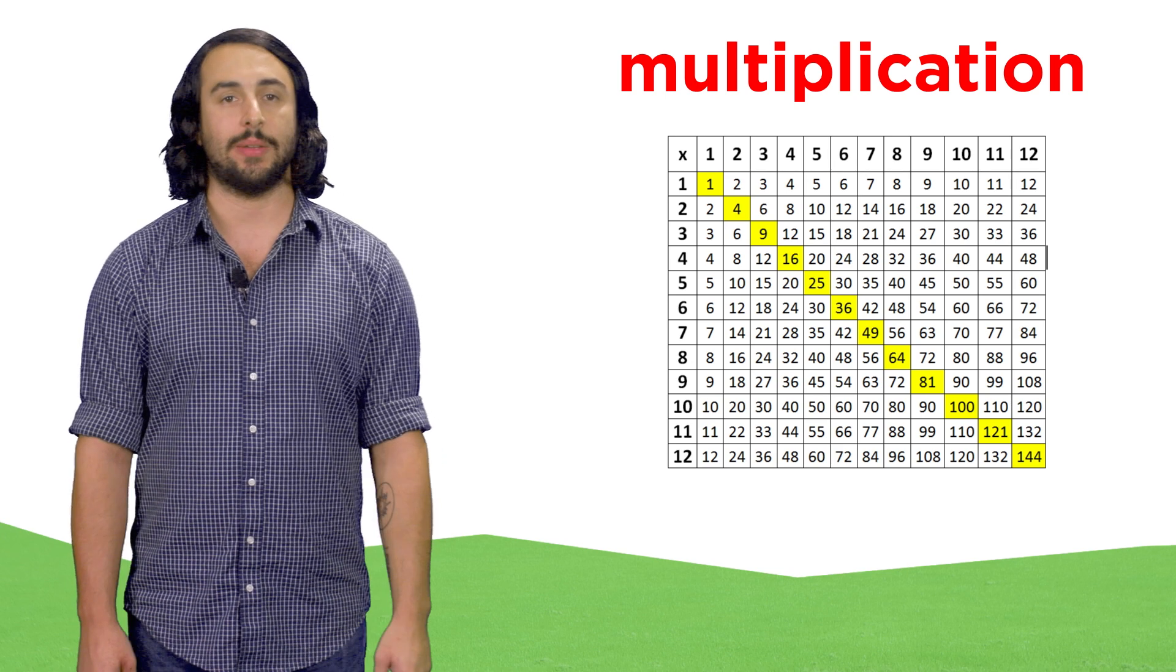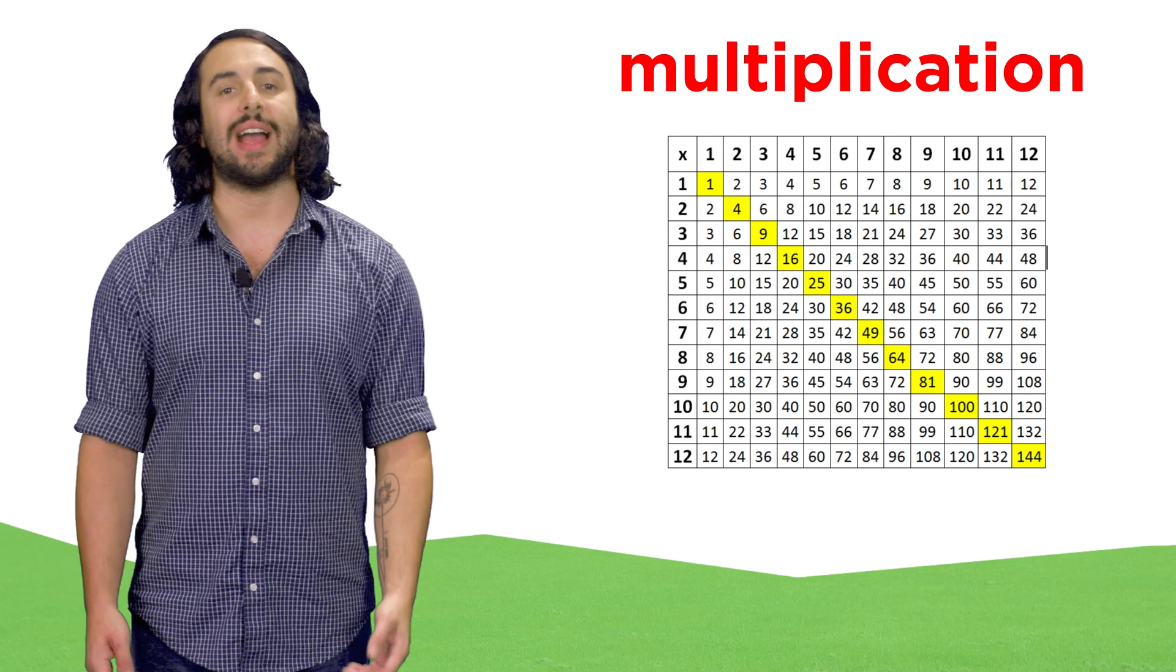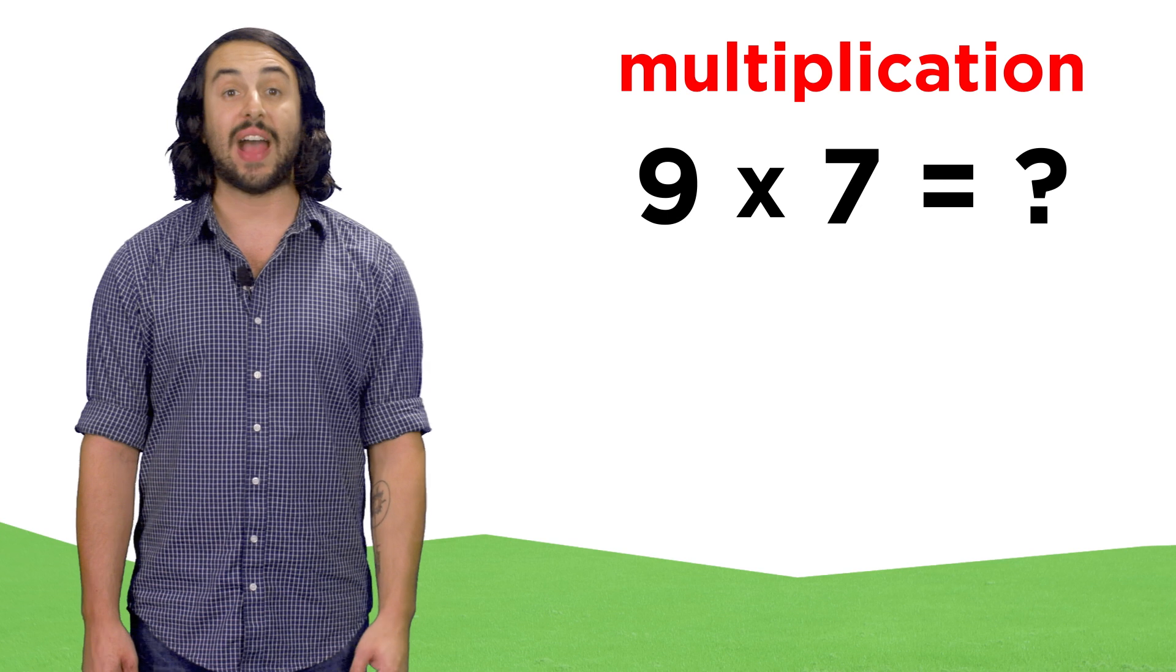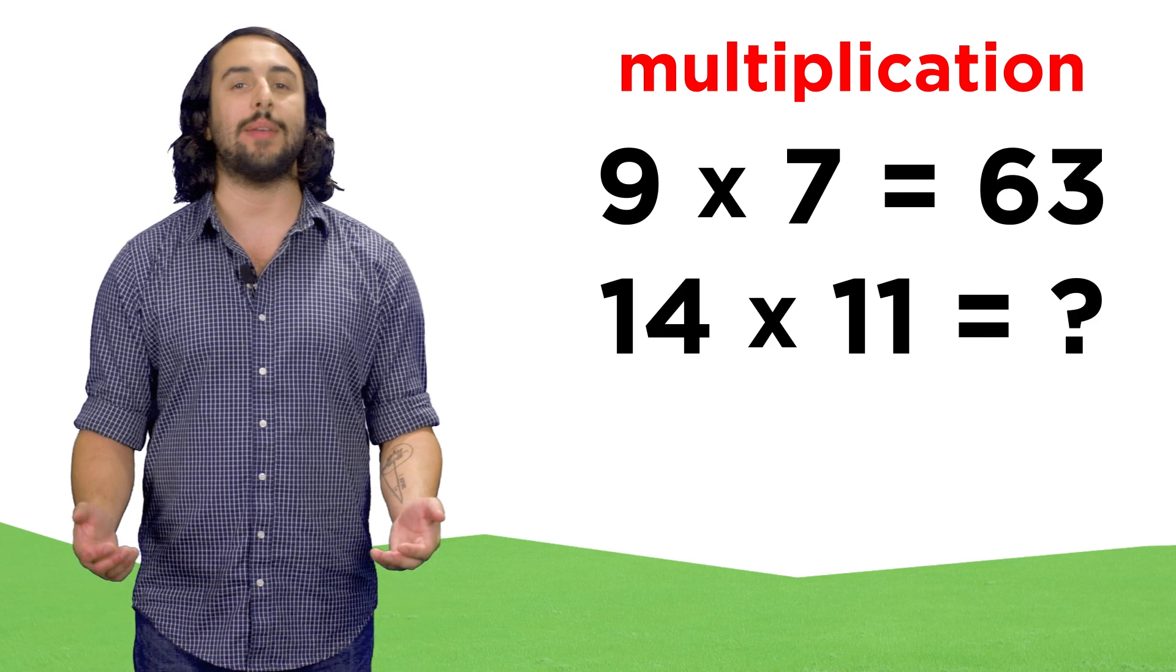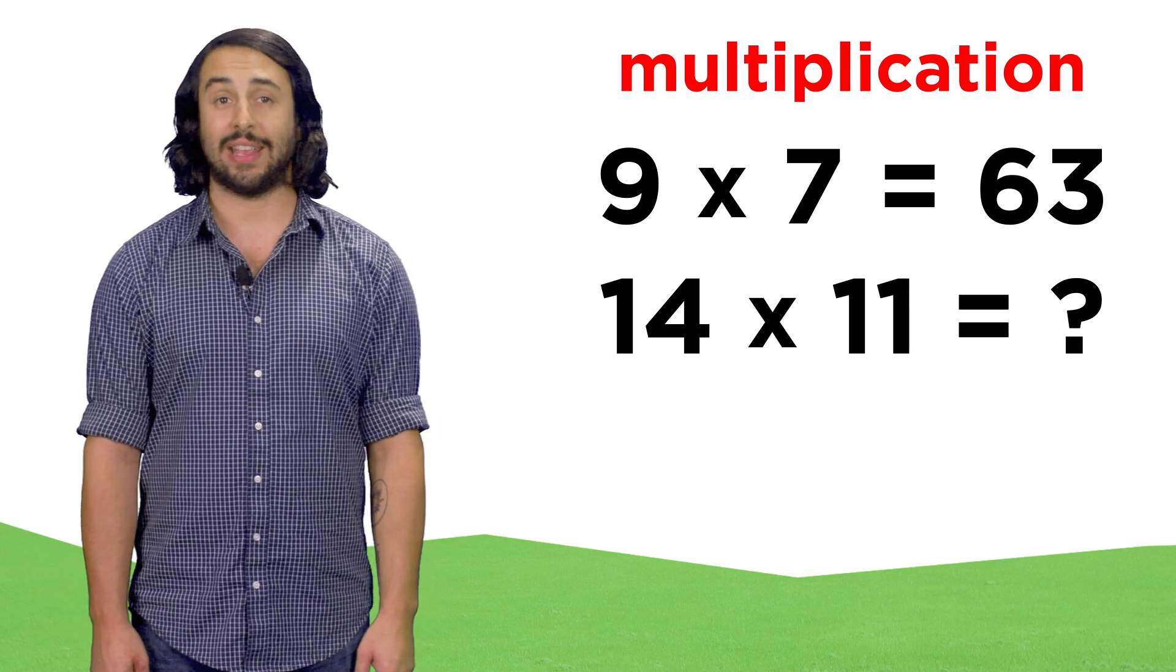We know what multiplication is, and hopefully we memorized our times tables. Think fast, nine times seven. Sixty-three, very good. How about fourteen times eleven? You can't do it as quickly, can you?